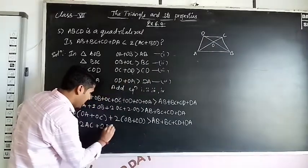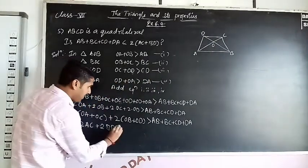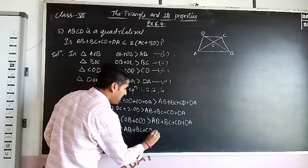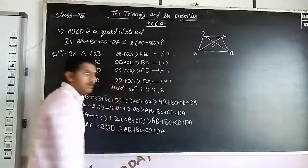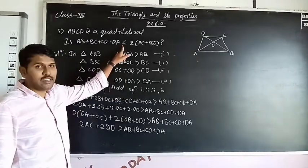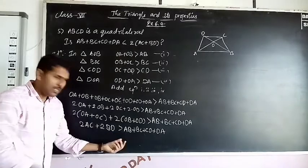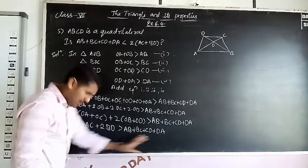This means two times AC is greater than AB + BC + CD + DA. So here the symbol is like that. Greater than anything is smaller than, so just flip it.